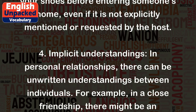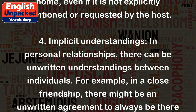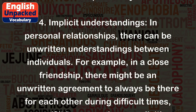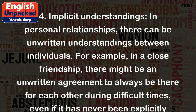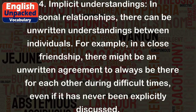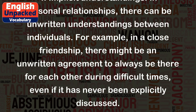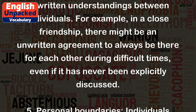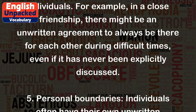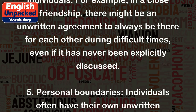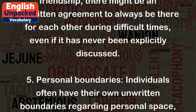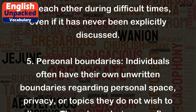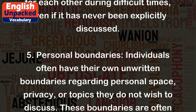4. Implicit understandings: In personal relationships, there can be unwritten understandings between individuals. For example, in a close friendship, there might be an unwritten agreement to always be there for each other during difficult times, even if it has never been explicitly discussed.